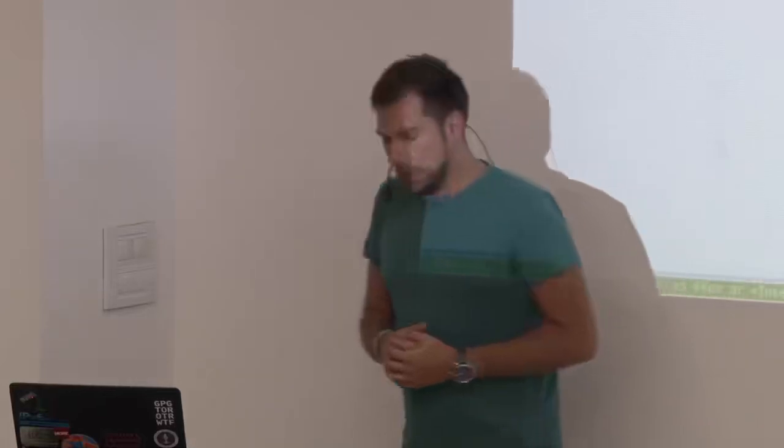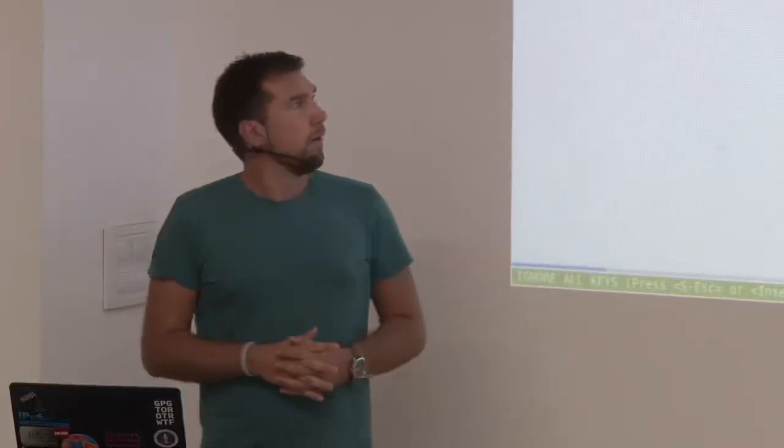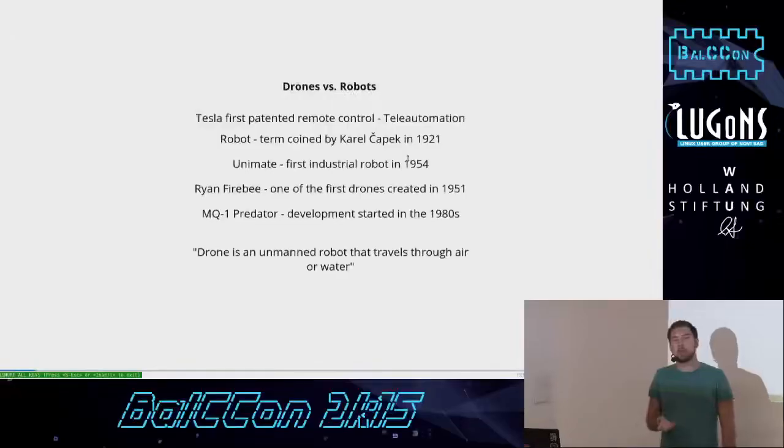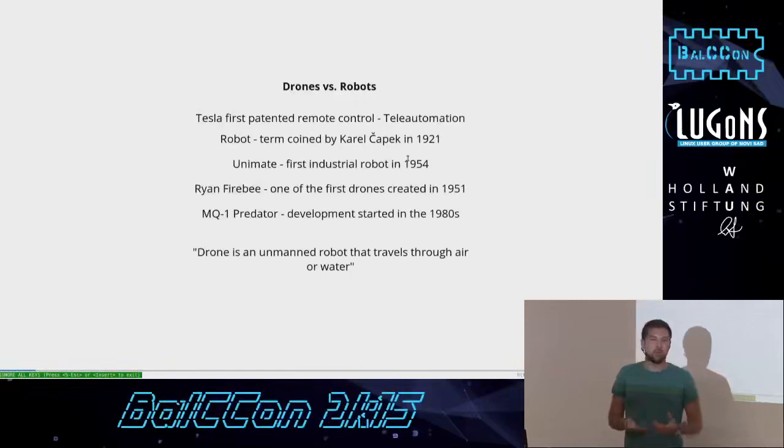Unimate was the first industrial robot built in the United States. It was used as a production robot on an assembly line and was later sold to General Motors. About flying drones, the Ryan Firebee is probably the first flying drone that really worked. You had V1 rockets, German rockets. They were something of a drone.